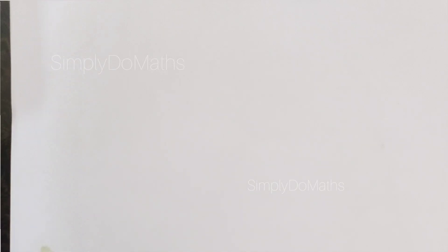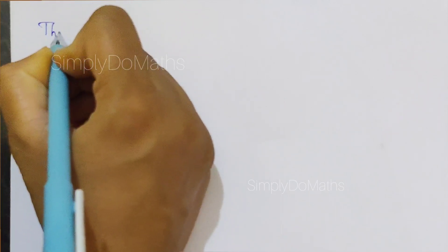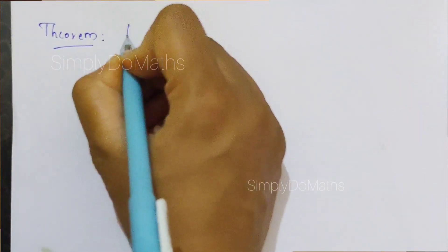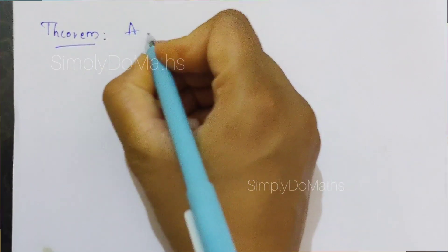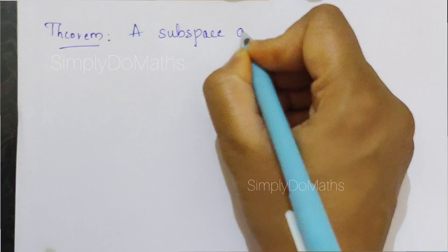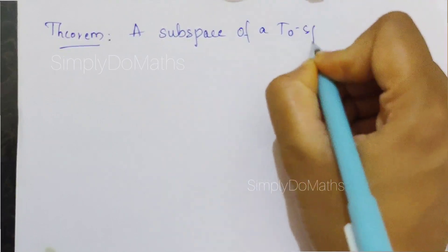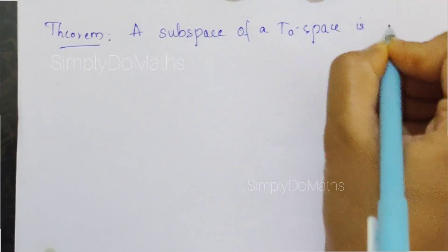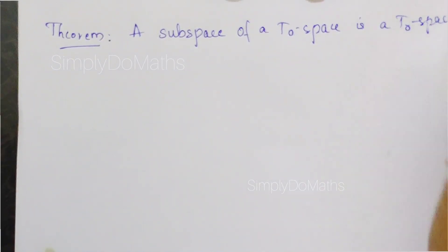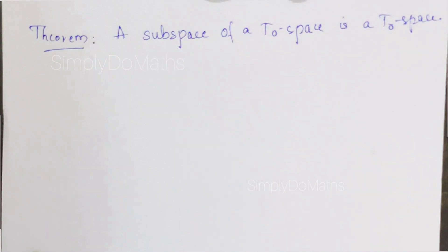Let us discuss one of the properties of a T0 space: a subspace of a T0 space is a T0 space. This is known as the hereditary property of a T0 space.